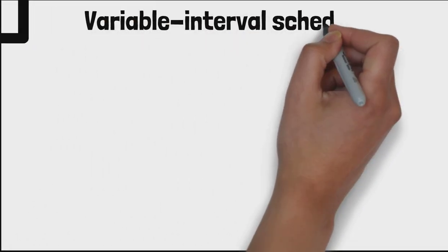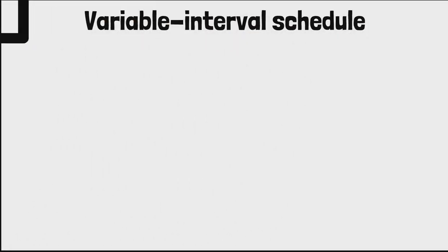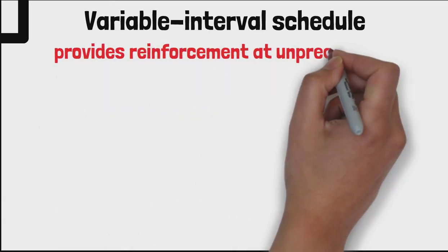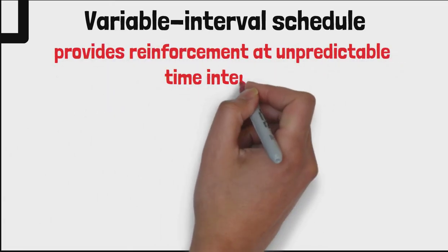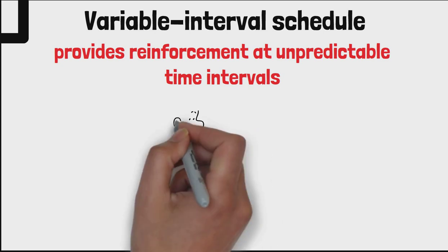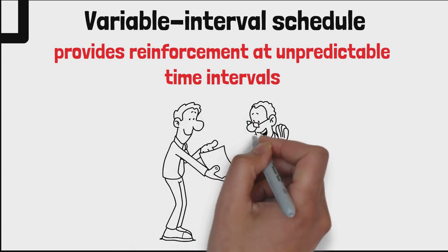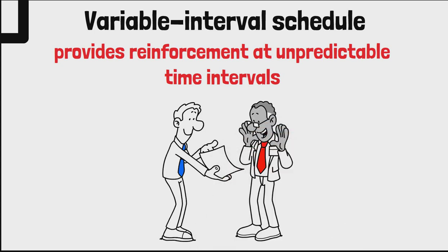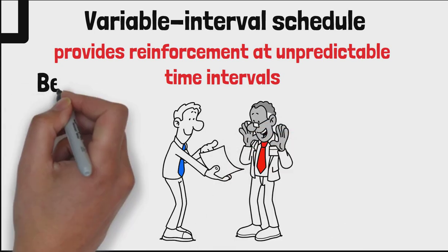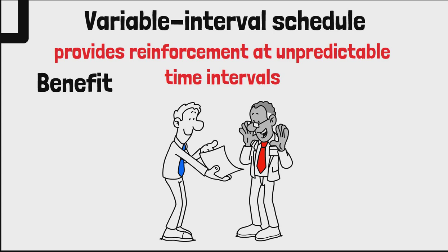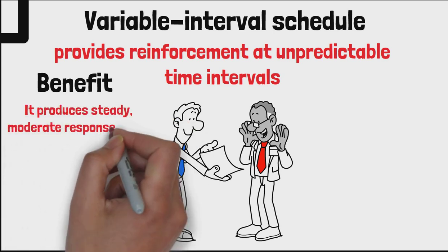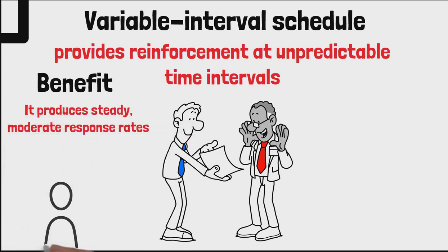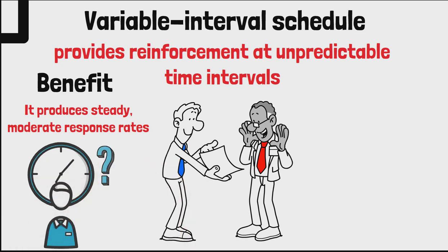Fifth is the variable interval schedule. A variable interval schedule provides reinforcement at unpredictable time intervals. An example is a boss who checks on an employee's work at random times, rewarding them if they are found working hard. The benefit of this schedule is that it produces steady, moderate response rates, because the timing of the next reinforcement is unknown.